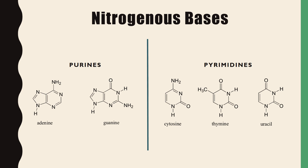First we have the nitrogenous bases. These include adenine, guanine, cytosine, thymine, and uracil. They can be divided into two major groups: purines and pyrimidines. Purines have a double ring structure — adenine and guanine are both purines. Pyrimidines, on the other hand, have a single ring structure, and that includes cytosine, thymine, and uracil.